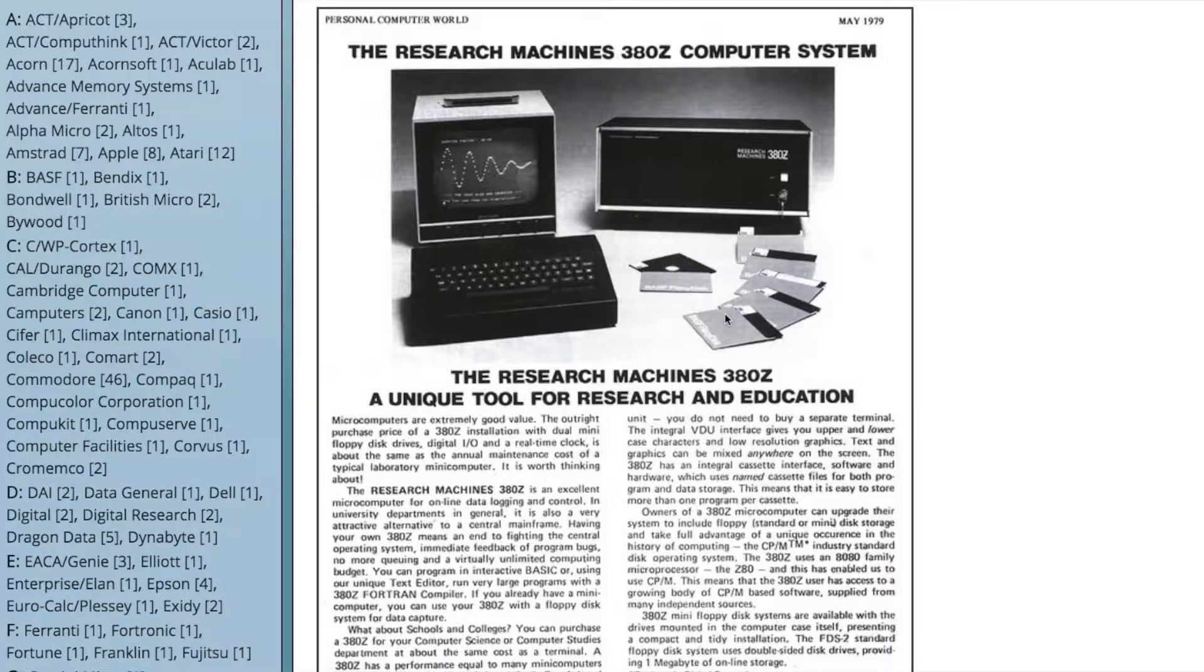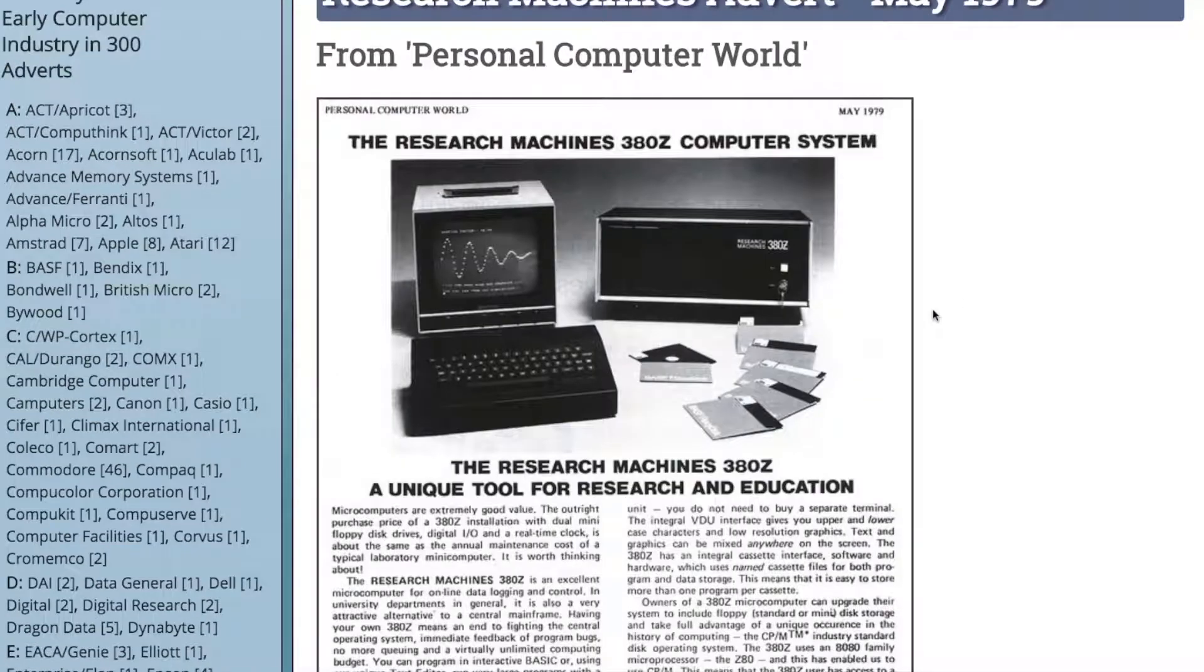A lot of UK schools had a Research Machines 380Z in there. We had two of them. It had two floppy disk drives, five and a quarter inch, you can see the pictures of them here, five and a quarter inch floppy disk drives.